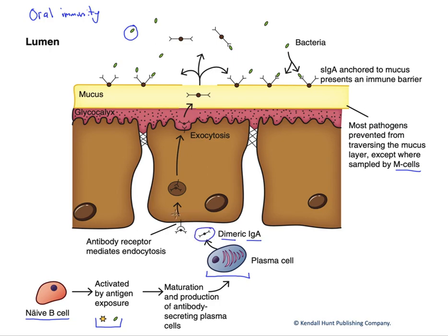There are receptors for the dimeric sIgA on the basolateral membranes of the enterocytes that initiate endocytosis. A vesicle containing those antibodies is formed, and they are then exocytosed at the apical membrane into the lumen of the gut. The secretory IgA antibodies get attached to the mucus, forming a barrier in the mucus layer, preventing proliferation of bacteria — binding them up and neutralizing their activities.